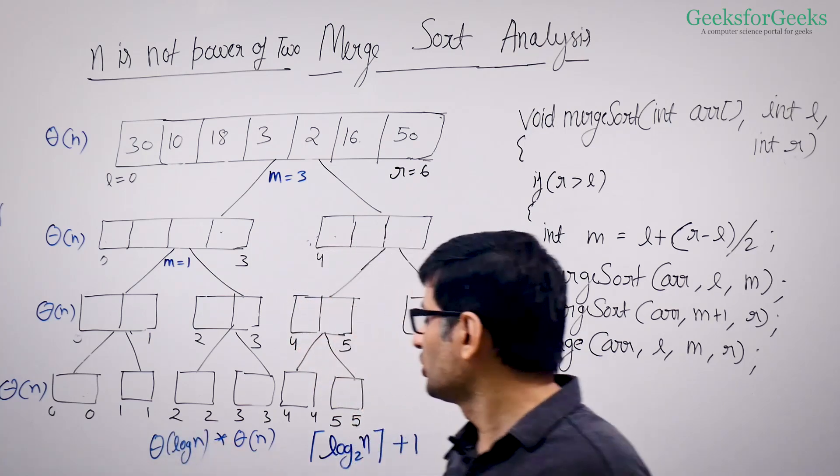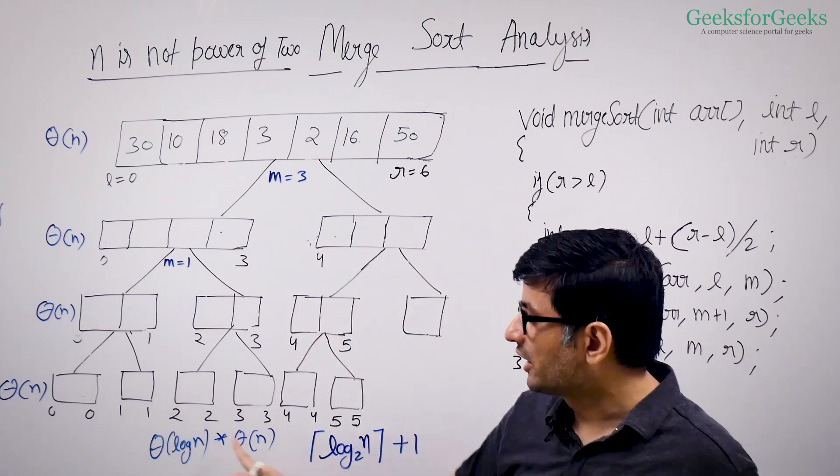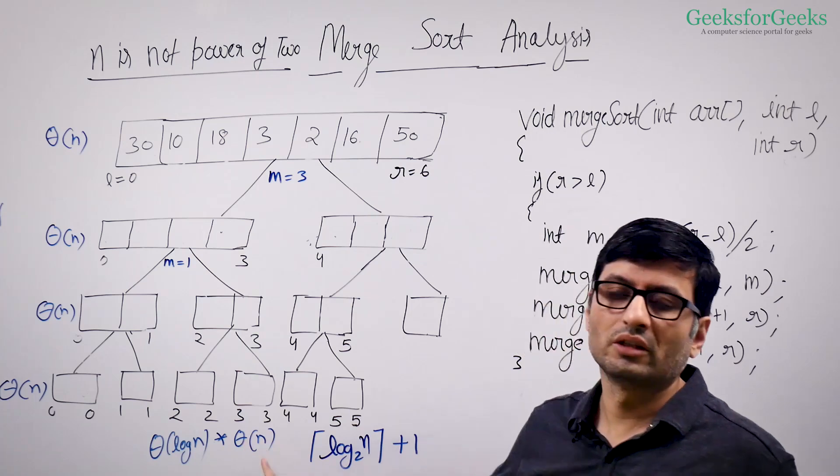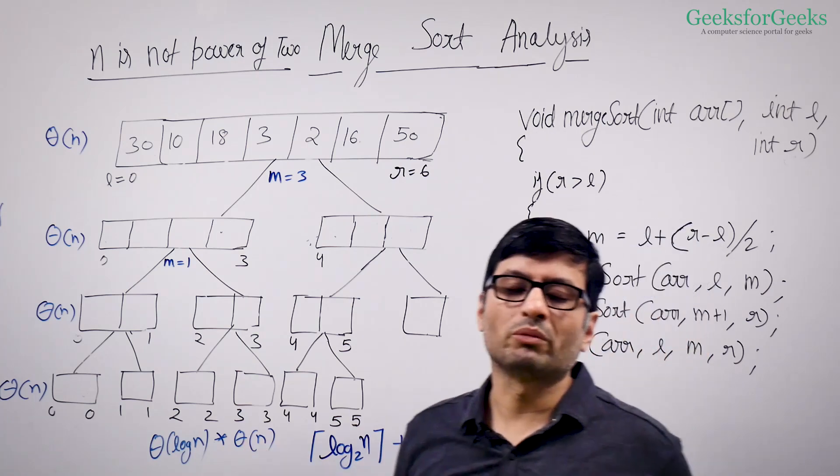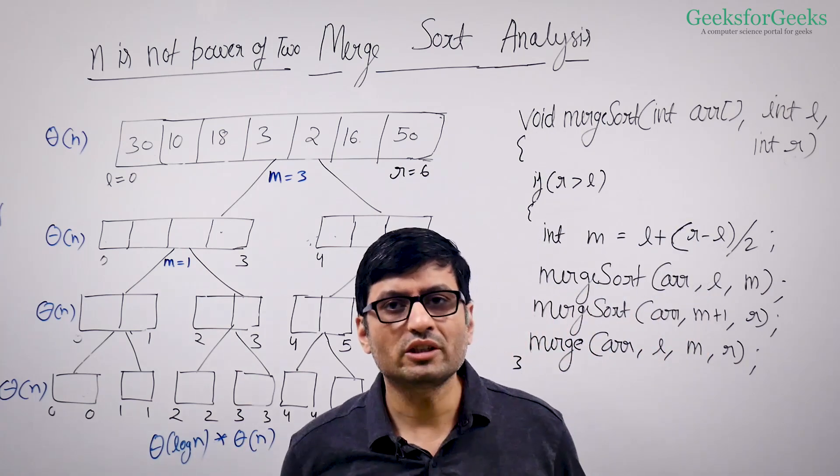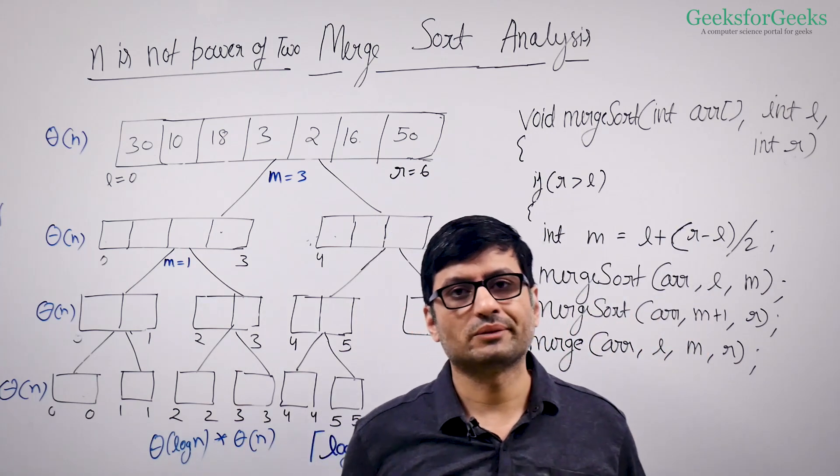So what is the overall time complexity? It is theta(N log N). The time complexity of Merge Sort is theta(N log N).